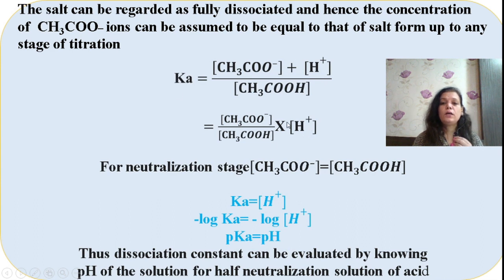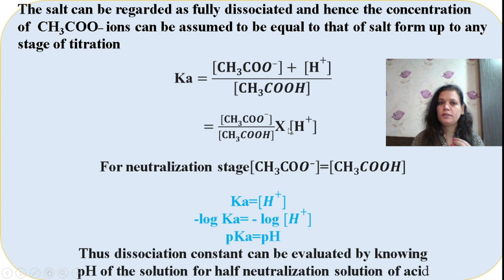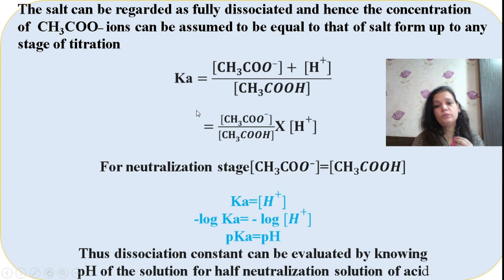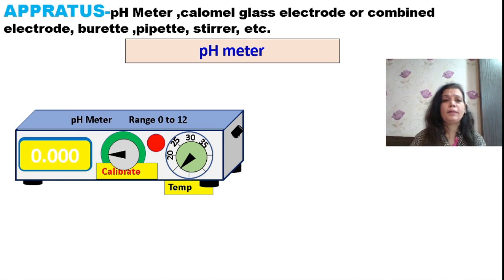This means the dissociation constant Ka can be directly related to the concentration of H⁺ ions. This is the key principle of today's experiment: if we can find the concentration of H⁺ at the half neutralization point, we can determine the pKa value — or Ka — of the given weak acid.